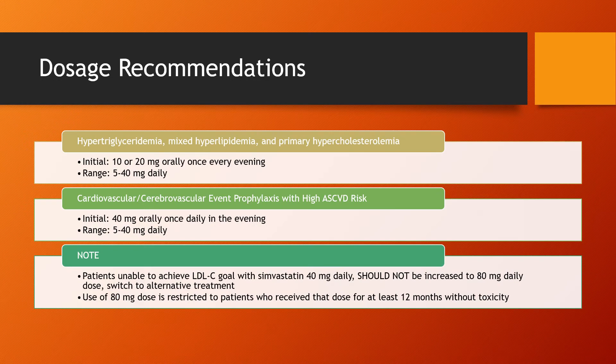Dosage recommendations — here we have our recommendations per disease state, per the guidelines as well as the manufacturer. Starting with hypertriglyceridemia, mixed hyperlipidemia, and primary hypercholesterolemia: initially, we're going to start patients at 10 or 20 mg orally once every evening, and the dose range should be around 5 to 40 mg daily.